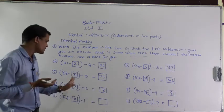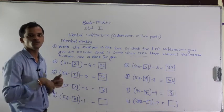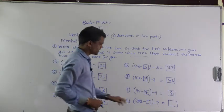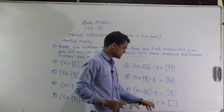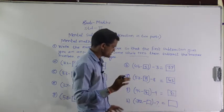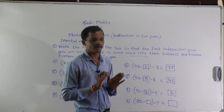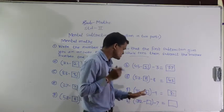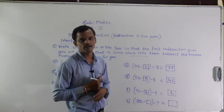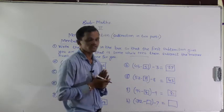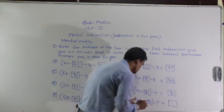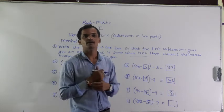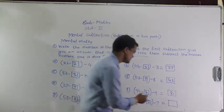Next step: 50 minus 1 equals 49. Next example: 72 minus blank minus 7. First decide which number should be subtracted from 72 so you get the nearest ten. If we subtract 2 from 72, you will get 70, and 70 is the nearest ten of 72. So write 72 minus 2 equals 70, and next step 70 minus 7 equals 63.